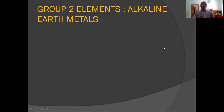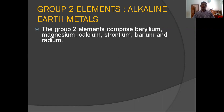Today our topic is alkaline earth metals, group 2 elements of the S-block. Alkaline earth metals are the second group elements and the elements are beryllium, magnesium, calcium, strontium, barium and radium.